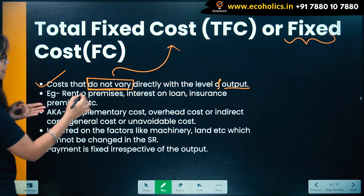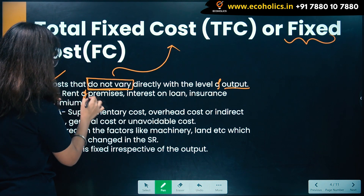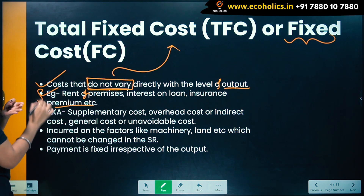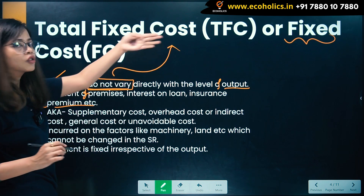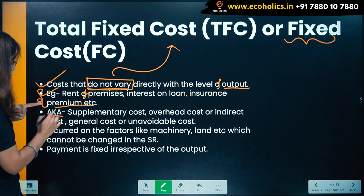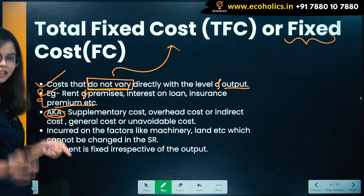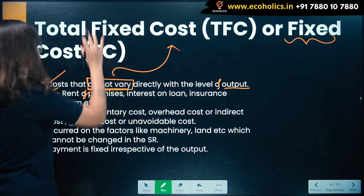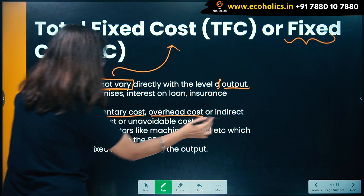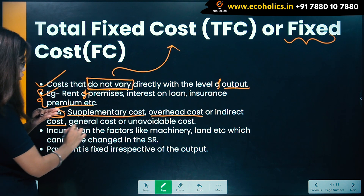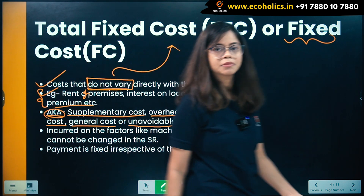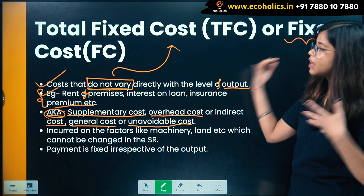Here are examples: rent on premises, interest on loan, insurance premium, etc. — these are examples of fixed cost. Also known as (aka) supplementary cost, overhead cost, and indirect cost.